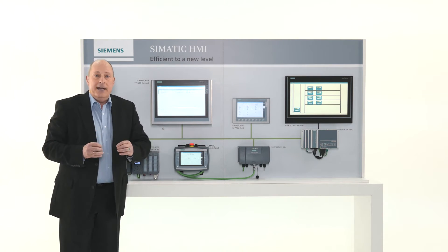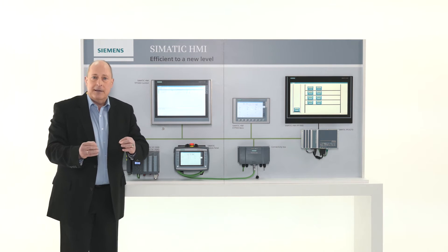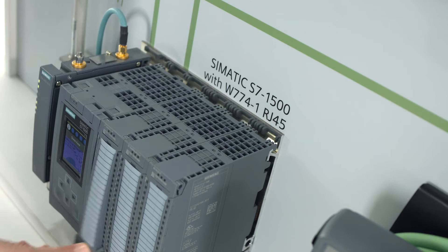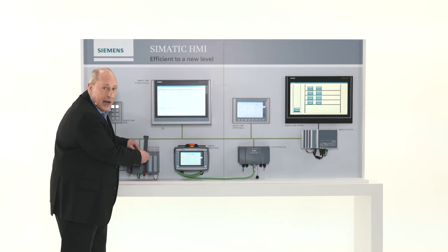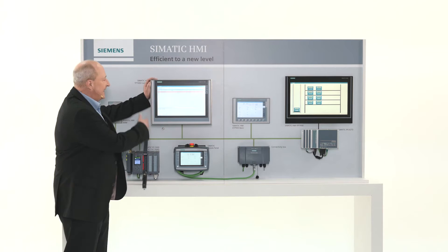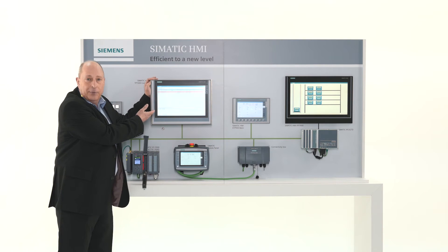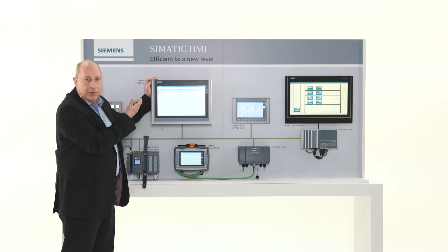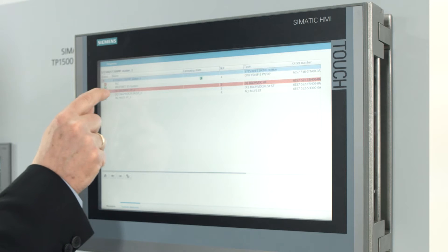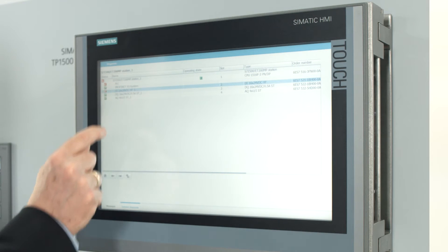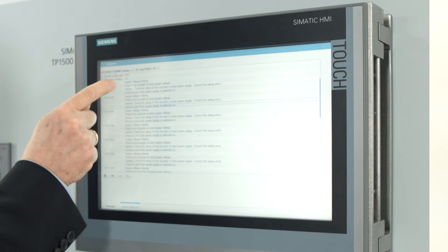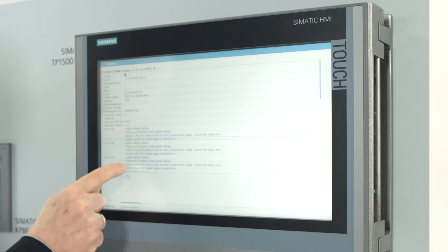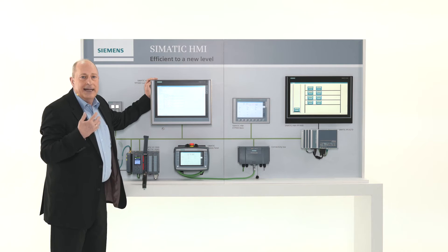I now create a failure — a system error, for example — by removing the power from my digital input module. The system instantly recognizes this and notifies me that a failure occurred. If I want further information, the system delivers it in a way that allows me to determine and fix the failure as quickly as possible.